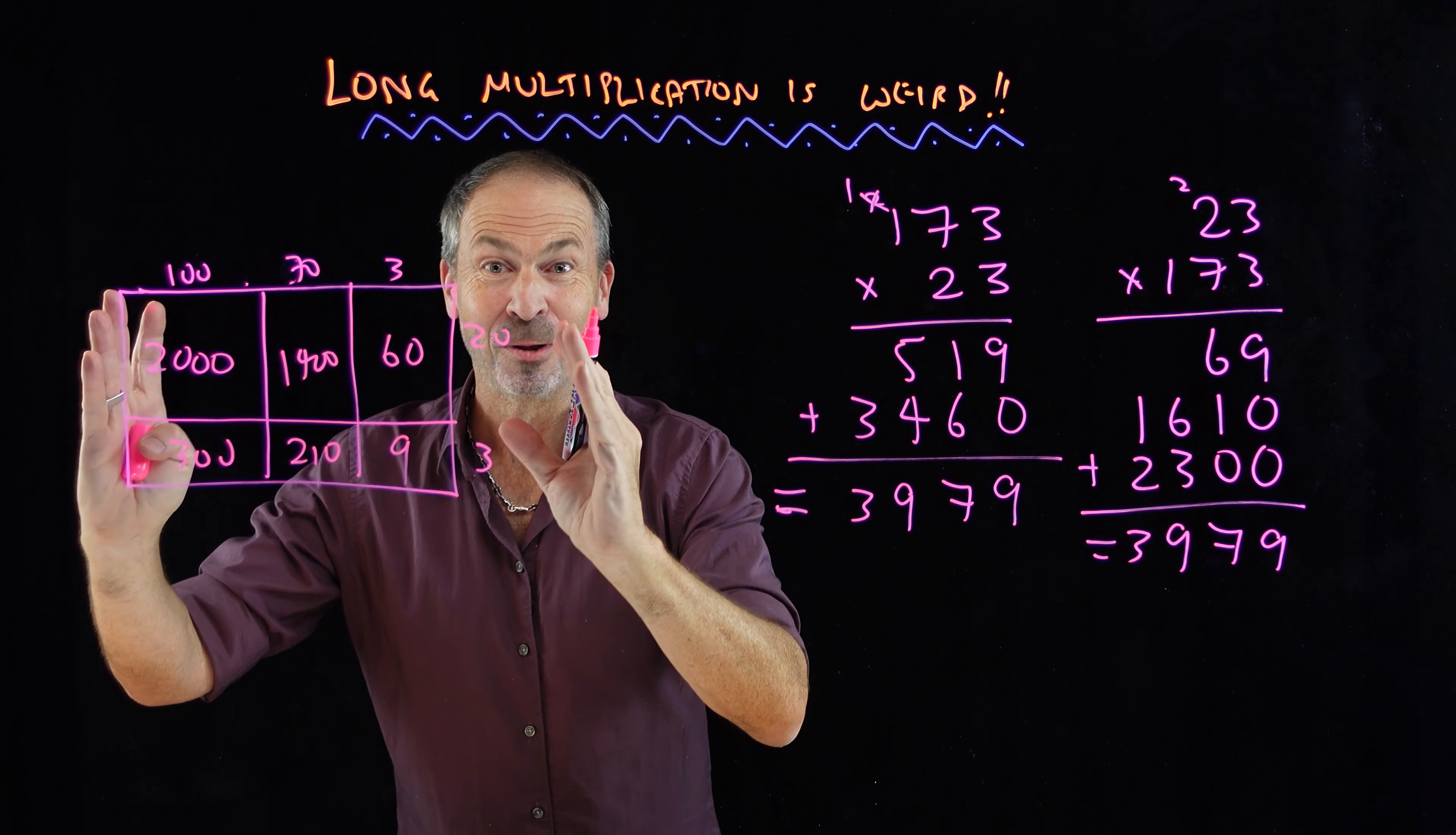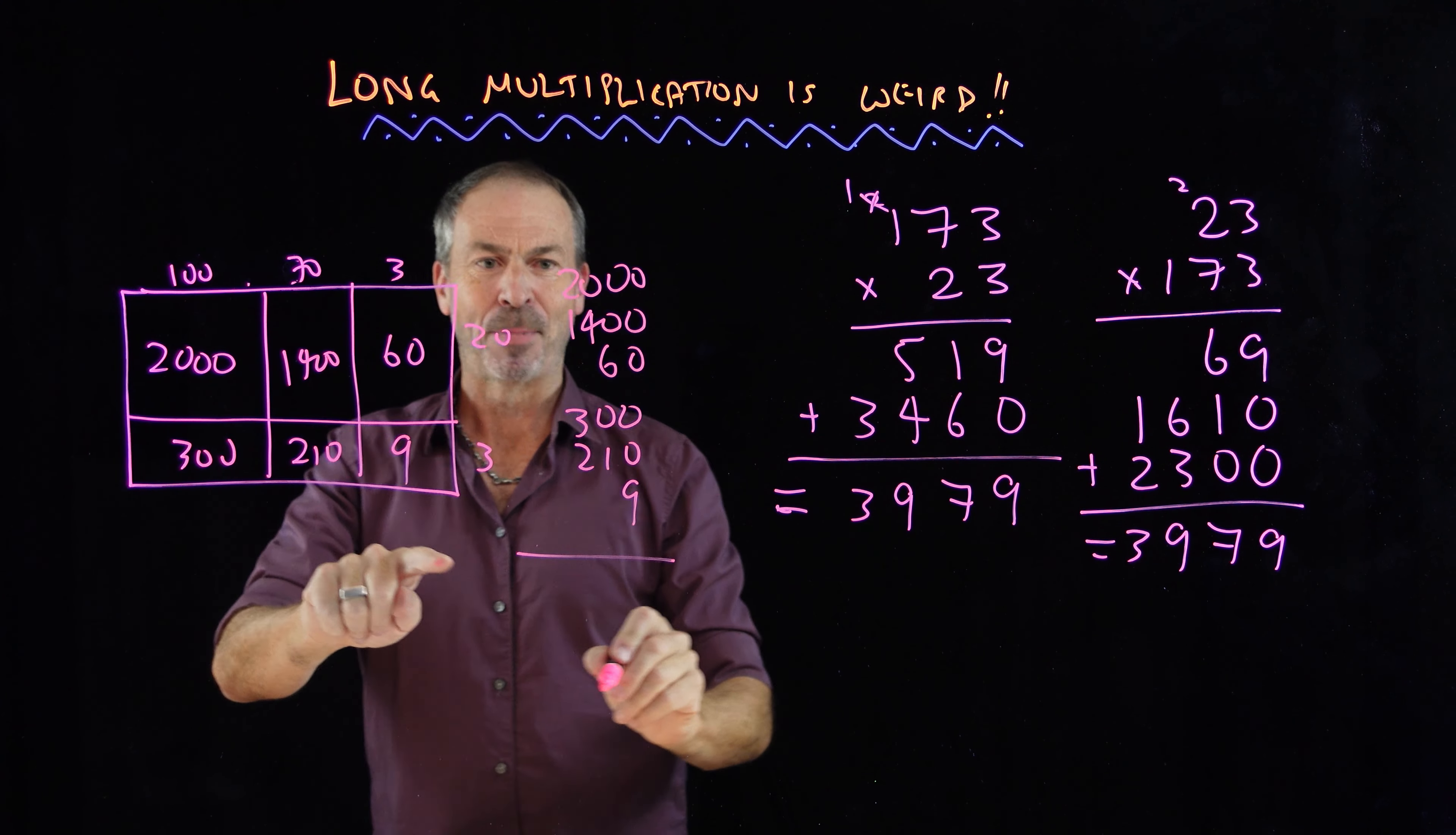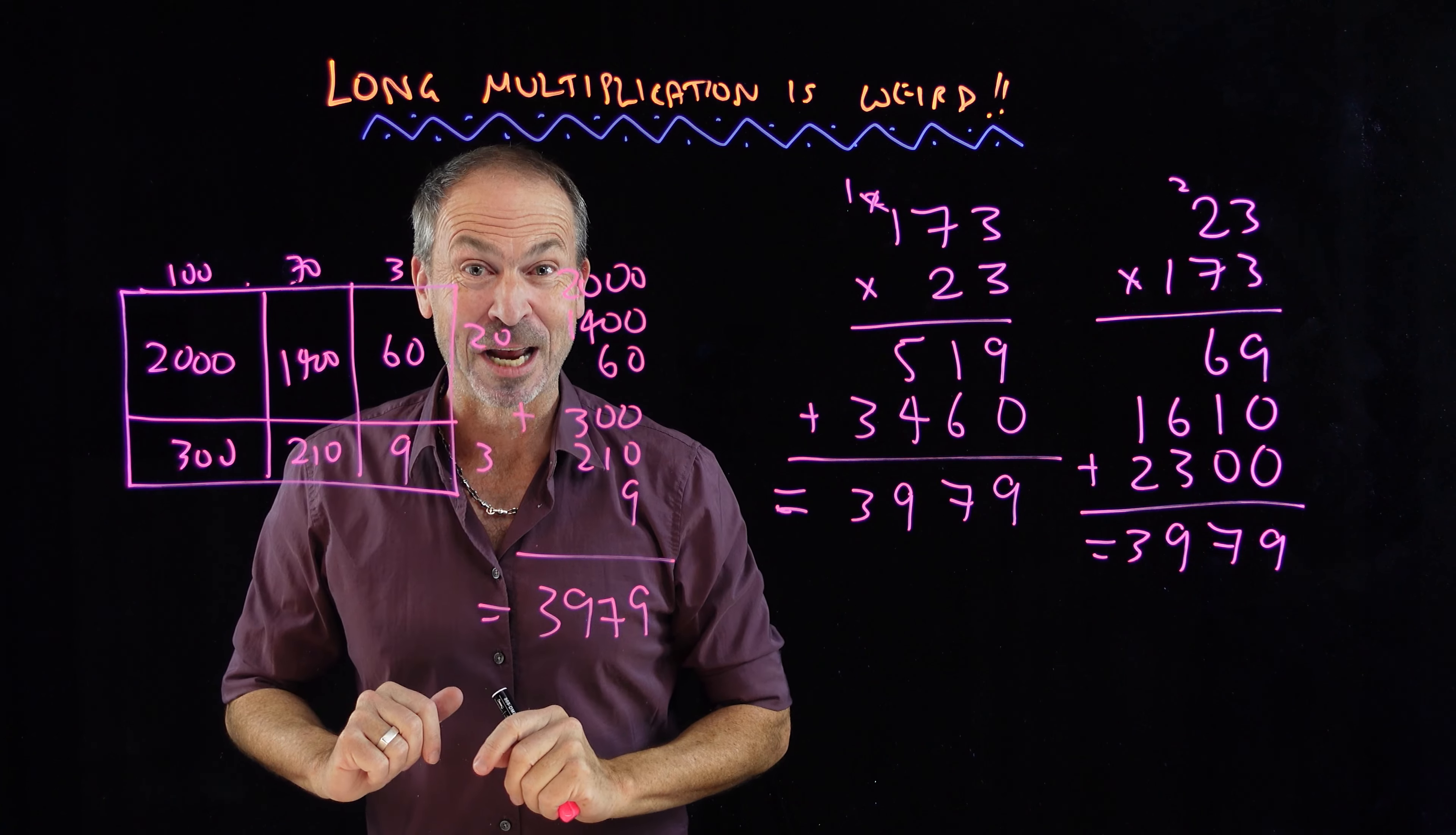So to work out the area of the rectangle, all I have to do now is add up the area of those six pieces. So I'll have 2,000 and 1,400 and 60 and 300 and 210 and 9. If I add these up, I get 9, I get 7, I get 9, and I get 3: 3,979. So I did a big addition problem in the end to work out the area of this rectangle.